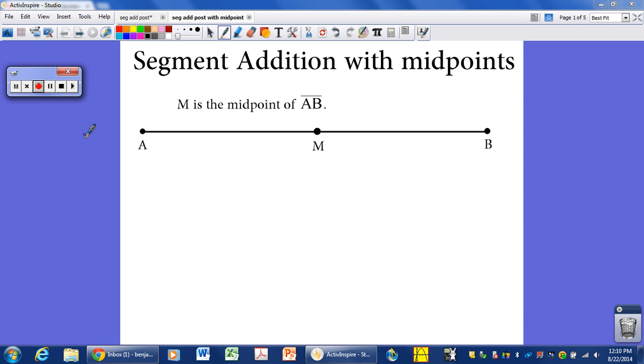We're still talking about the segment addition postulate, which says you can add up shorter segments and equal an entire segment length. But now we're going to throw in the concept of a midpoint. And what a midpoint is, if we're given that M is the midpoint of the segment AB here, that means the length from A to M is equal to the length from M to B. So M is in the middle of length AB, so these two lengths are equal.